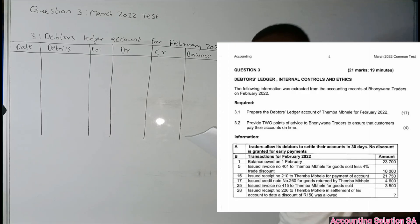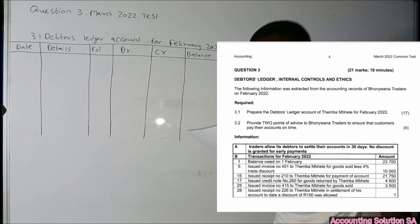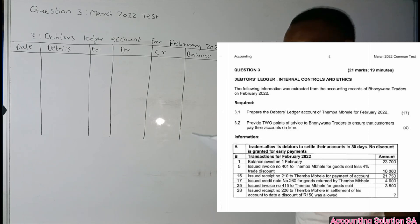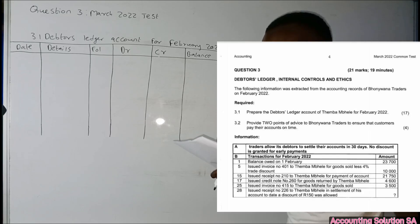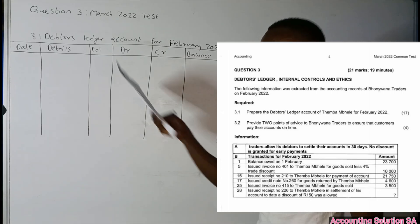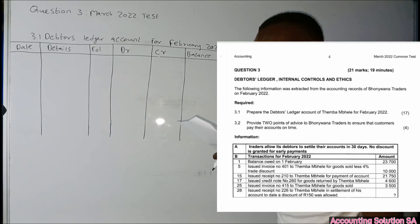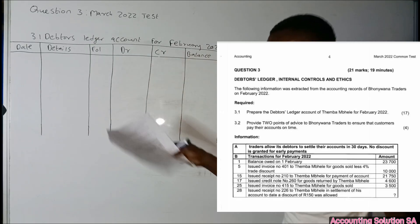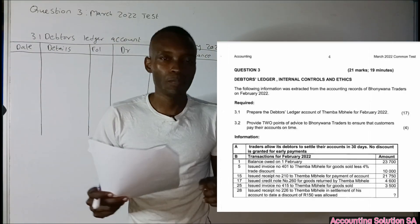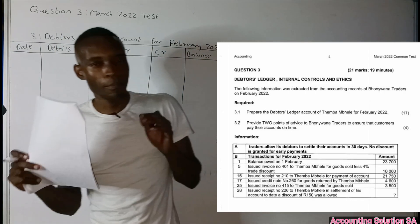The question covers a debtor's ledger and also internal control and ethics. The following information was extracted from the accounting records of Bonwana Traders for February 2022. Question 3.1 requires us to prepare the debtor's ledger account of Timber Bale for February 2022 — that's 17 marks. We will answer question 3.2 after this one. Let me give you some basics about what a debtor's ledger is.